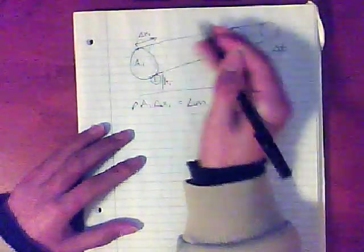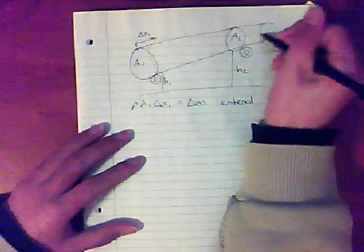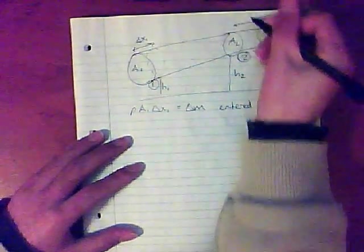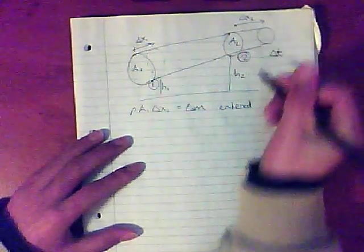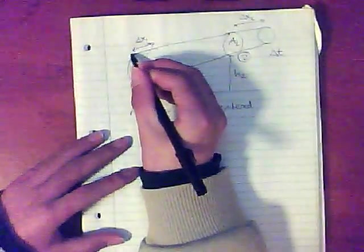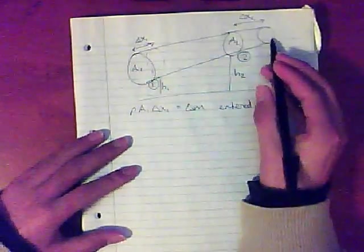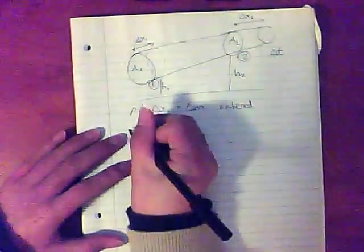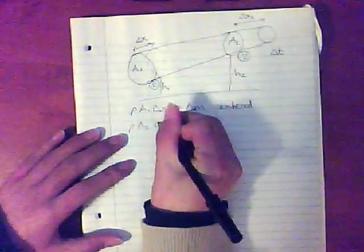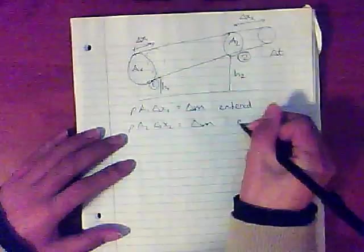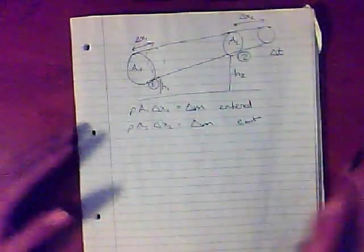So, this mass of water is the same as this mass of water which exited the pipe. And that will also have travelled a distance of delta x. But I'll call this delta x2 because the distance travelled out here is not the same as the distance here because the areas are different. The volume is the same, but the height is different.